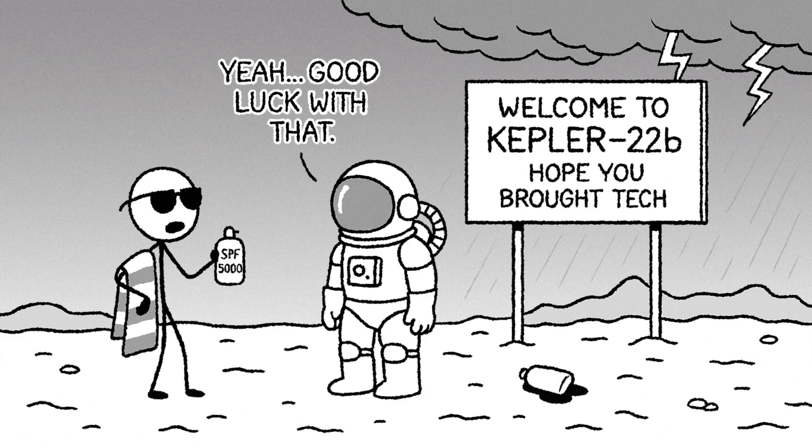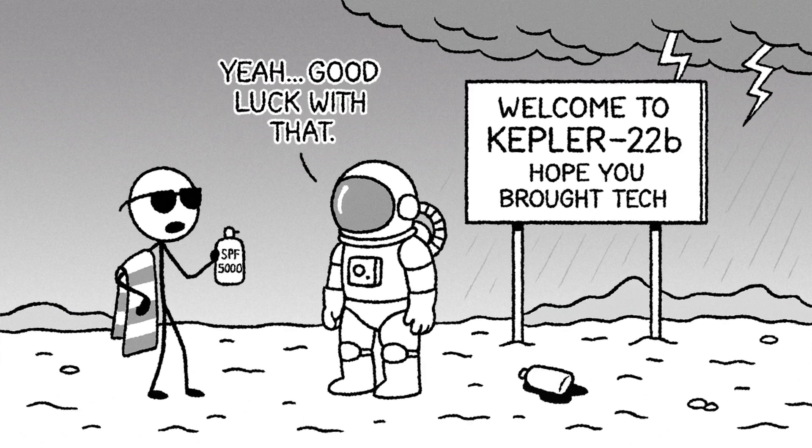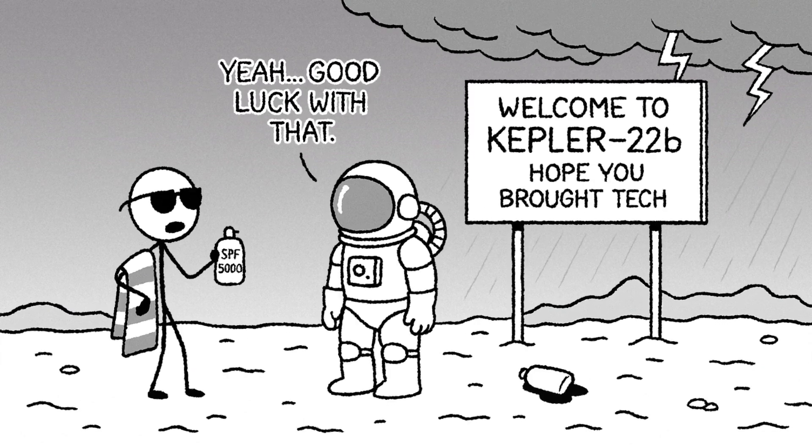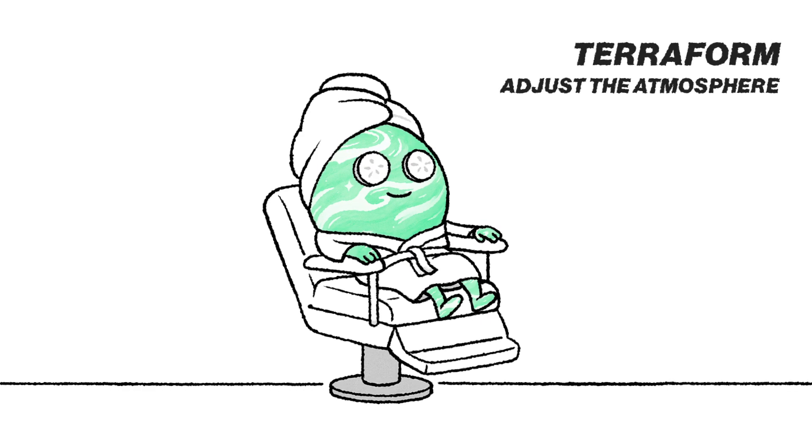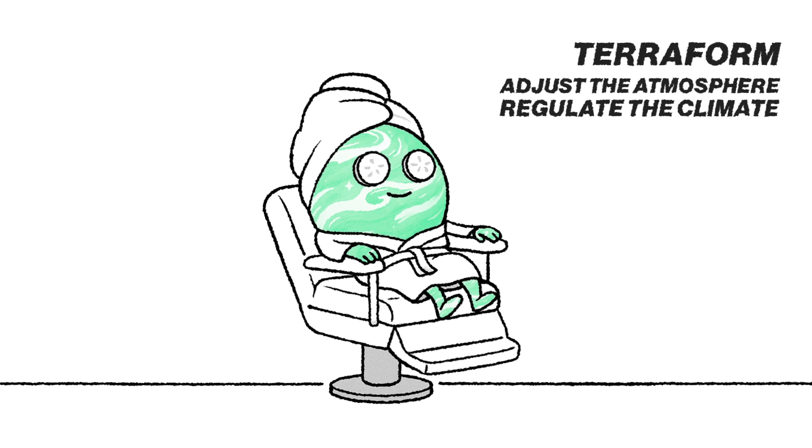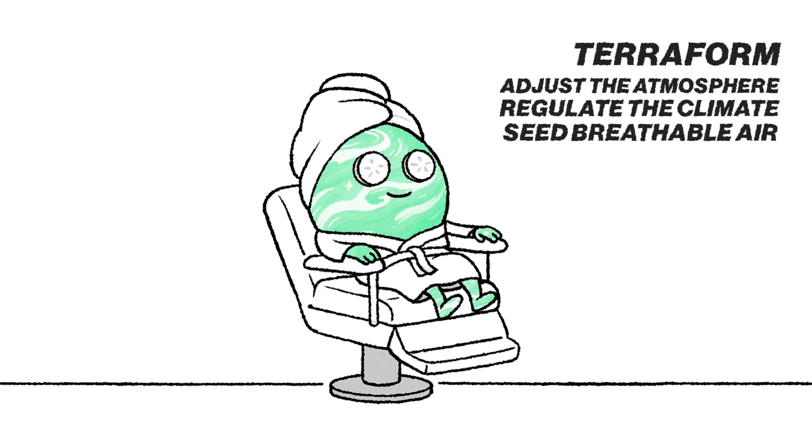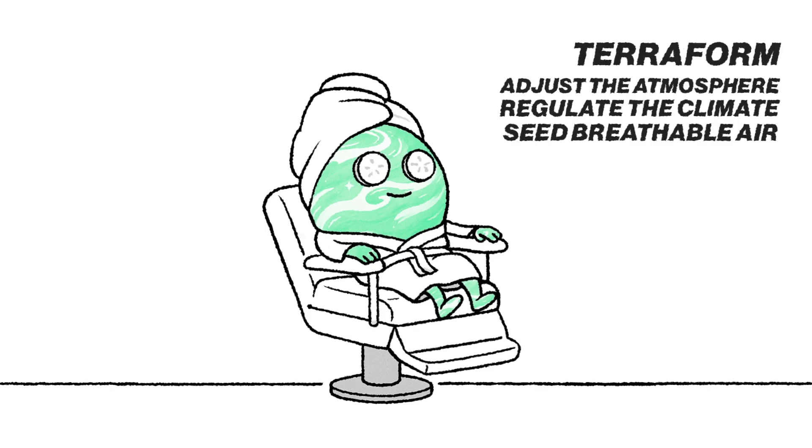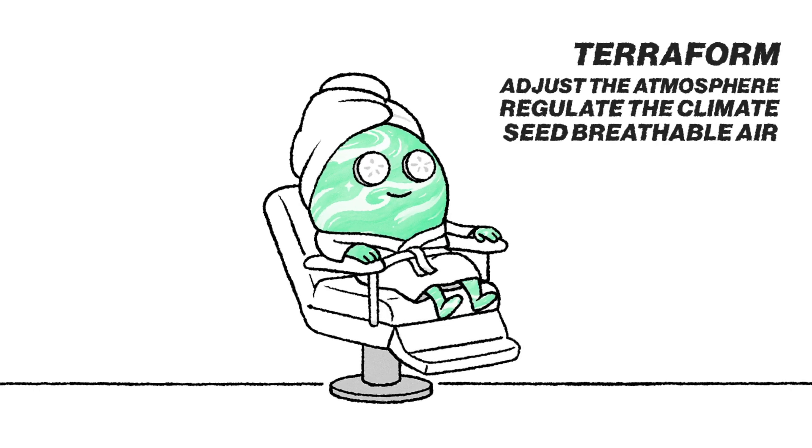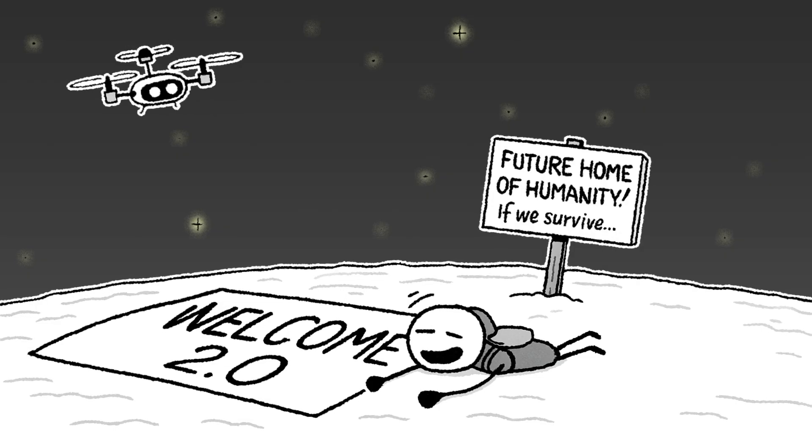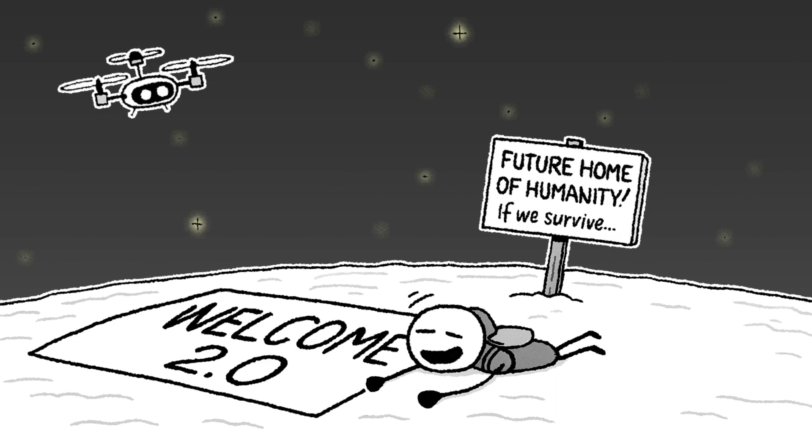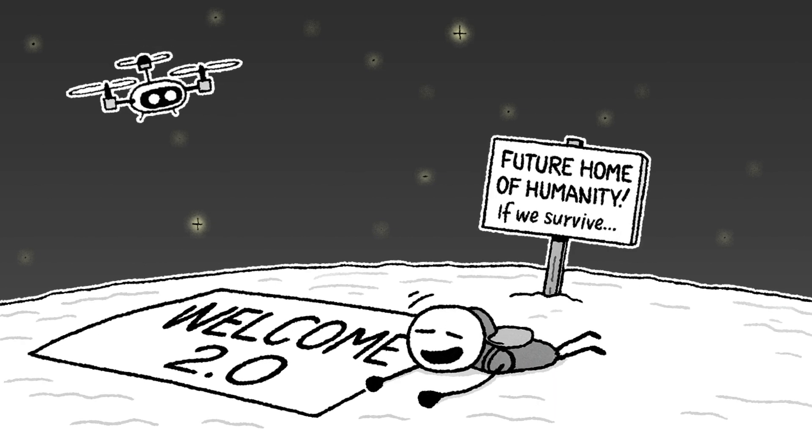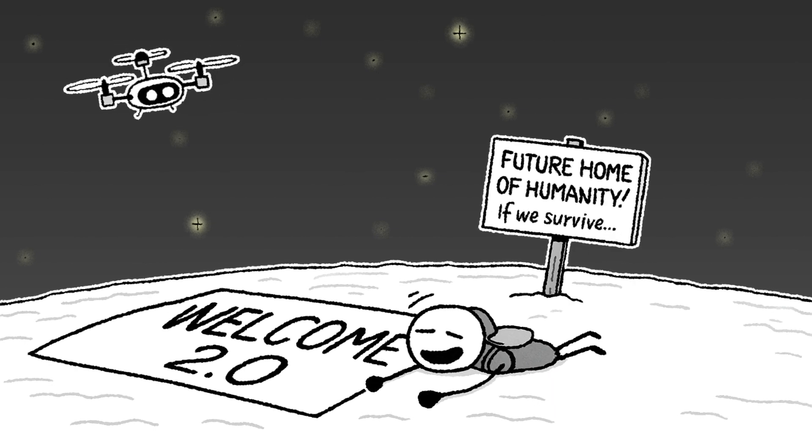Either way, Earth-like life would need more than just sunscreen and optimism to survive. But here's the optimistic angle: if we could terraform it, adjust the atmosphere, regulate the climate, and seed breathable air, Kepler-22b could offer more surface area, more water, and potentially a more stable climate. Gravity would still be a beast, but with the right tech, it might just be a second chance, assuming there's land to stand on and we don't immediately get flattened by the pressure.